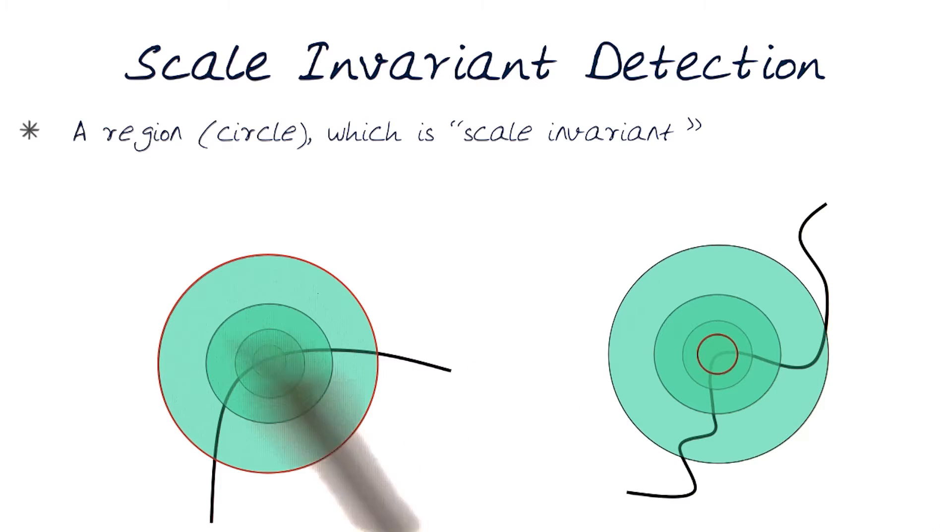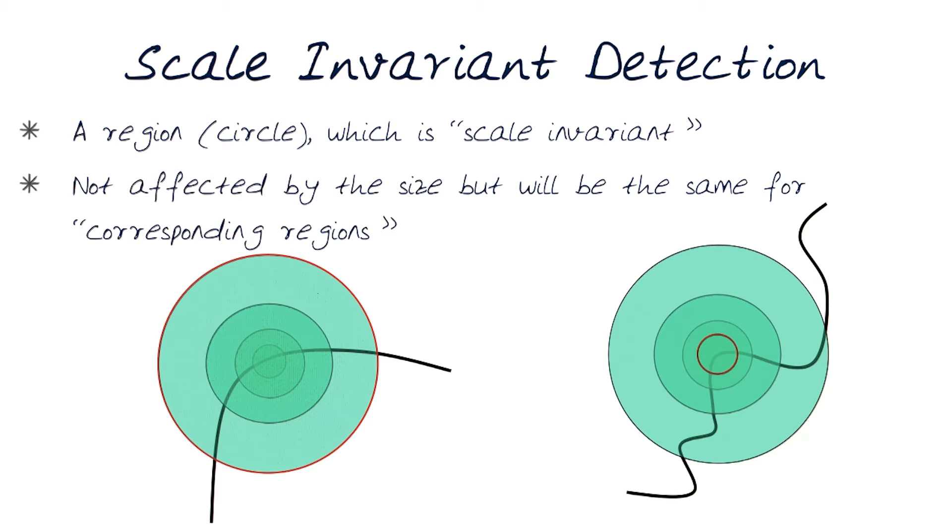We need to identify a region, using these regions as circles, which is scale invariant. A property that this region would have is that it should not be affected by the size and will be the same for all corresponding regions.